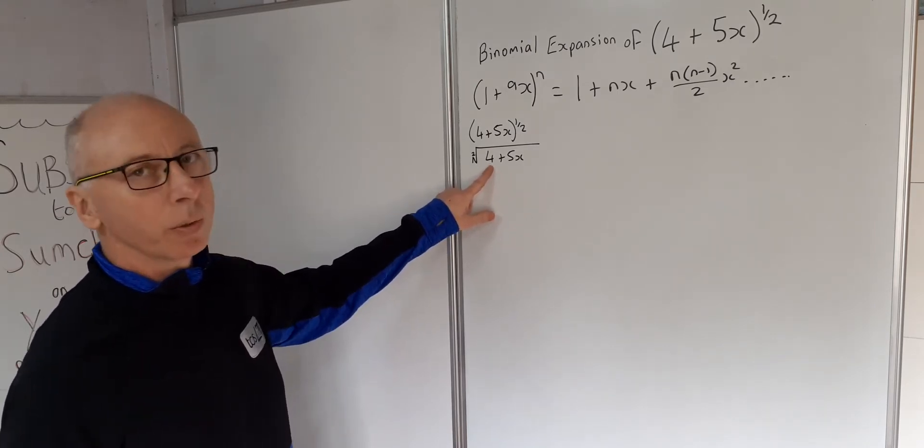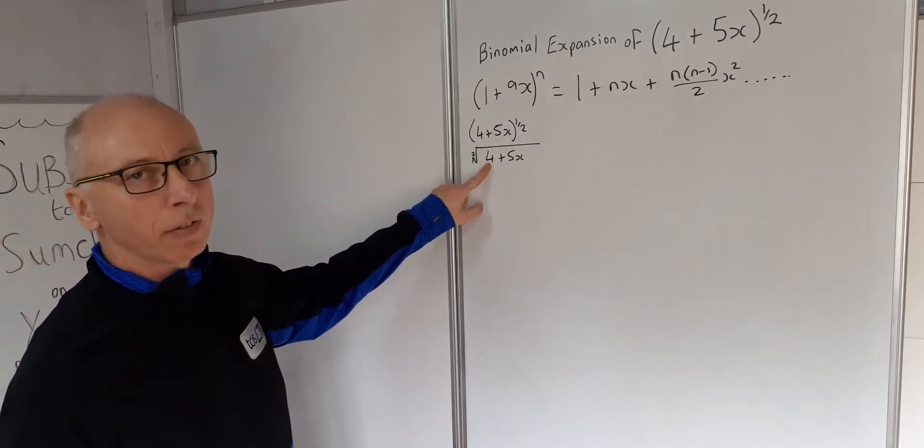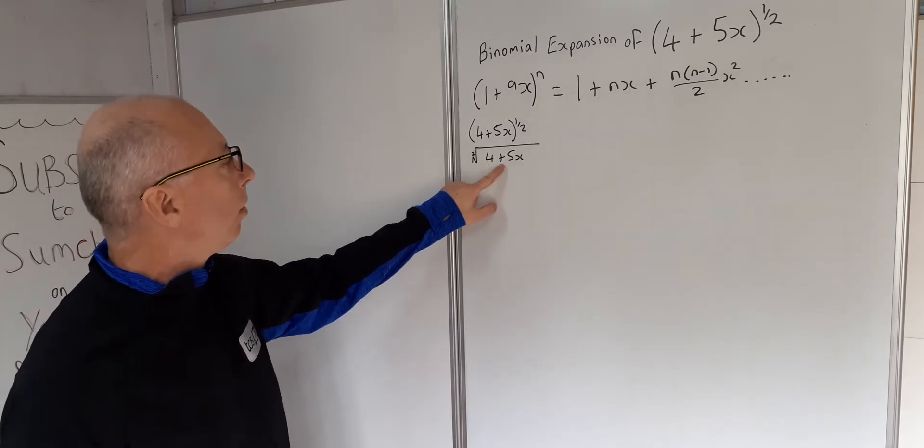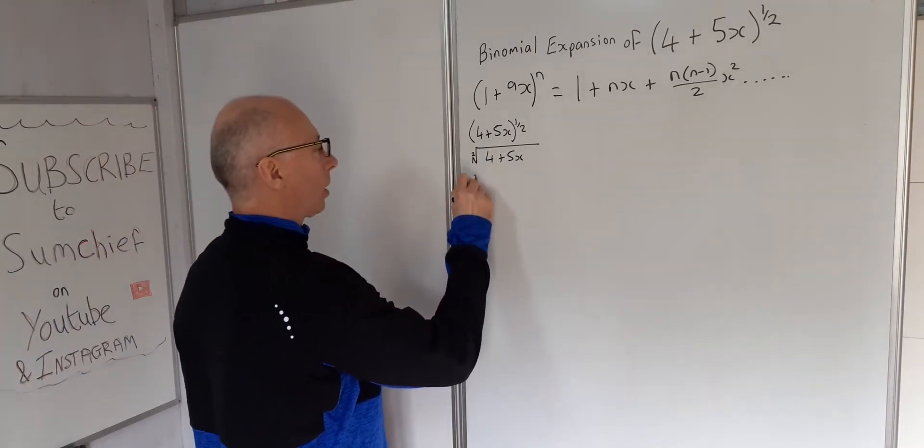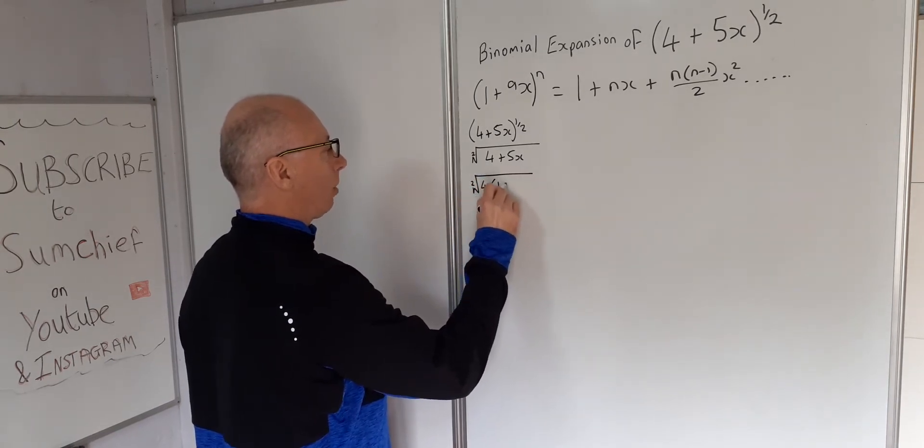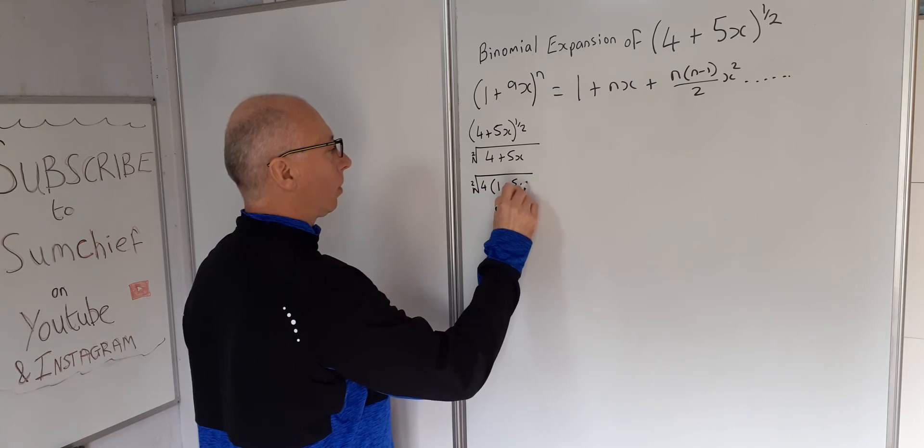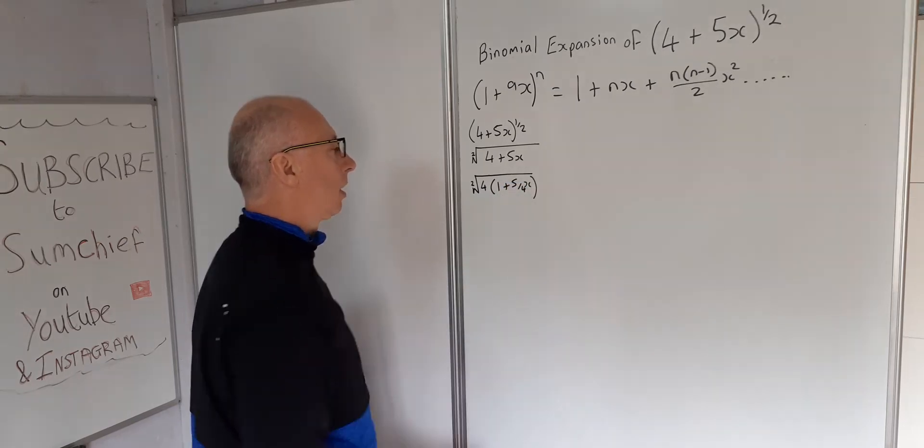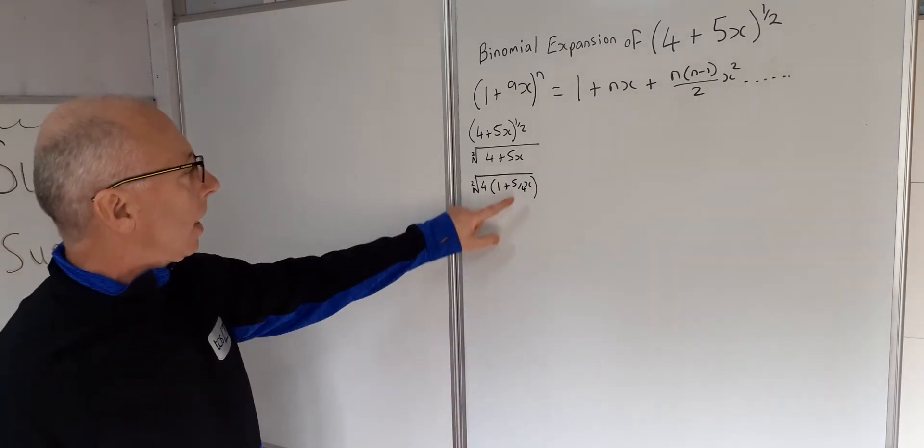Now what we could do to get the 1, if we factor out the 4, then we get 1 plus something. So let's do that. So we've got square root of 4 times 1 plus 5 over 4x. That is now the same as that.